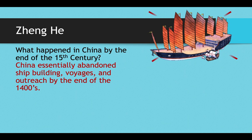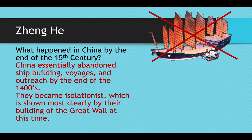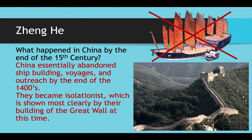He actually made it a punishable offense to build a ship with more than two masts. The other ships were docked or destroyed, and China stopped outreach. This isolationism is most clearly shown by the building of the Ming wall — what we see as the Great Wall of China. The largest portion of the wall was built by the Ming dynasty, which illustrates their isolationism. If this emperor had not abandoned shipbuilding and voyages, it's almost certain that China would have discovered the Americas before Europeans did.